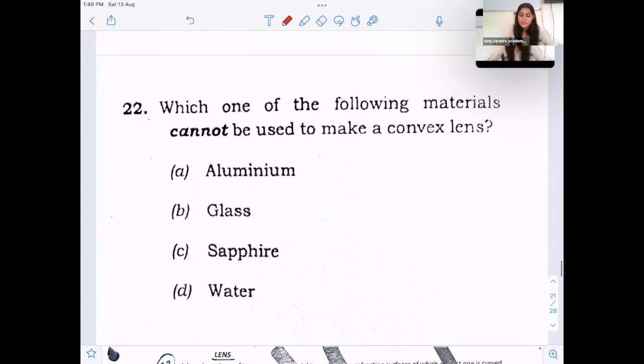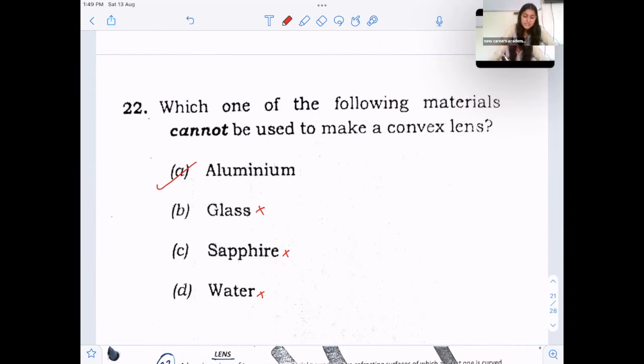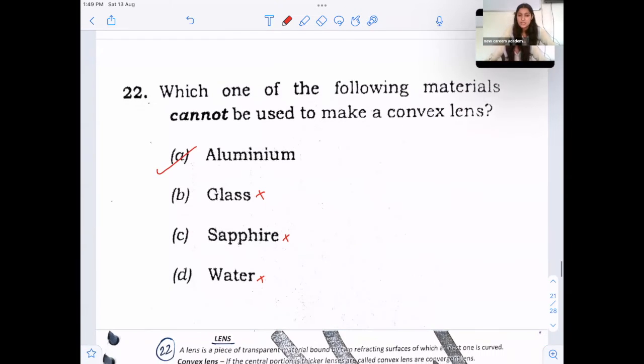Next, which one of the following materials cannot be used to make a convex lens. So when we talk about lens, so that material should be capable of refraction of light. So it can be glass, yes, obviously glass can be possible. Water can also be used as lens and sapphire. Sapphire is a gemstone. So aluminium, aluminium is not capable of refraction of light. So option A, aluminium cannot be used to make convex lens.